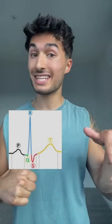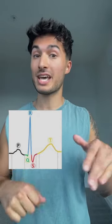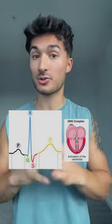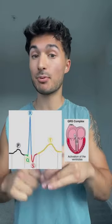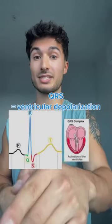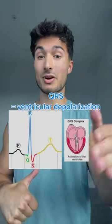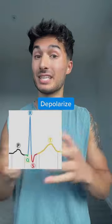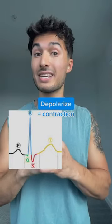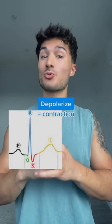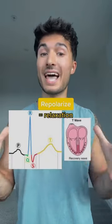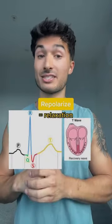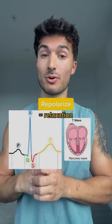The blood goes through into the ventricles, and the ventricles have to contract to further squeeze the blood. They depolarize, and that's what you see in the QRS complex. When something depolarizes or squeezes, it has to repolarize or relax, and that's the T wave — the ventricles repolarizing.